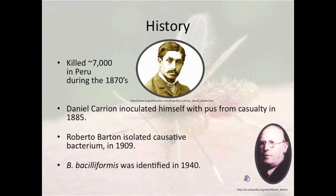During the 1870s, Carrion's disease killed around 7,000 people in Peru, most of which were railway workers. Daniel Carrion, a researcher and scientist interested in this disease, inoculated himself with pus from a casualty in 1885. Three weeks later, he showed acute symptoms of the disease, and unfortunately, on the fourth week, he passed away. The disease would soon be named after him.